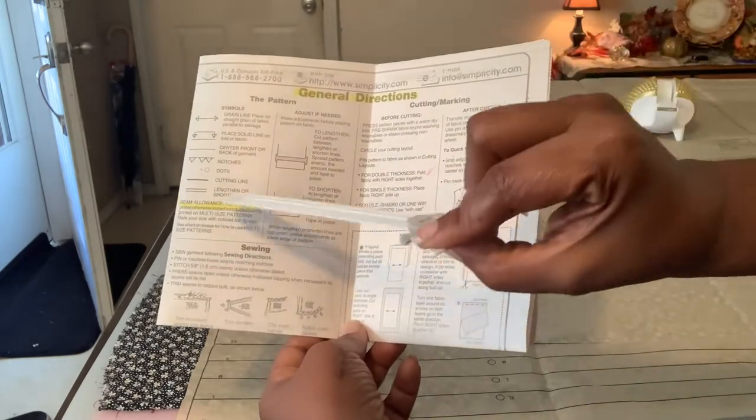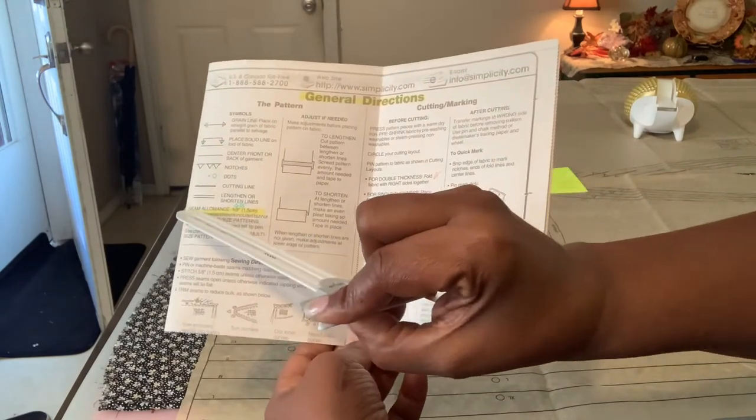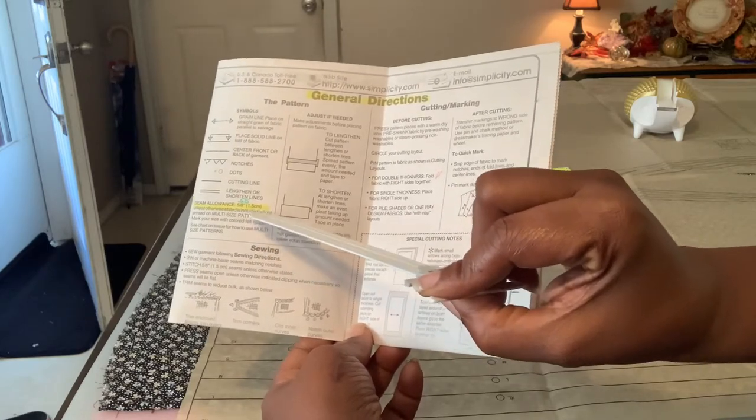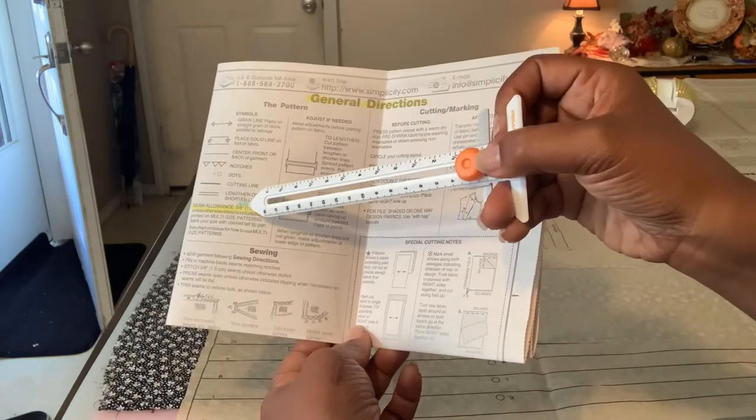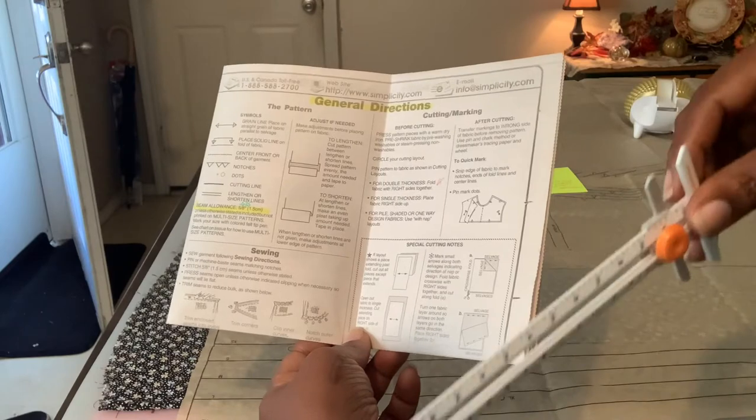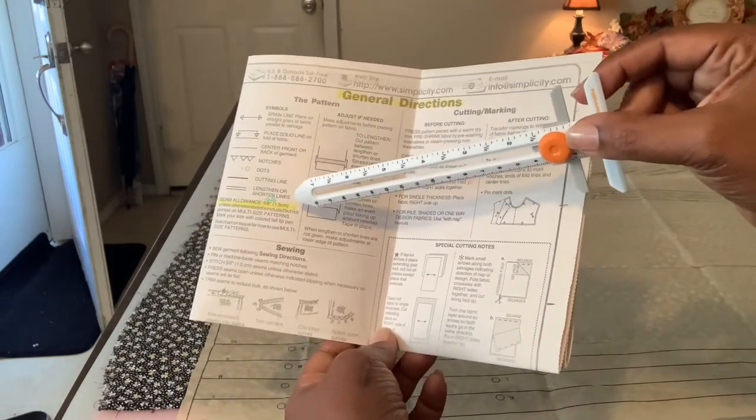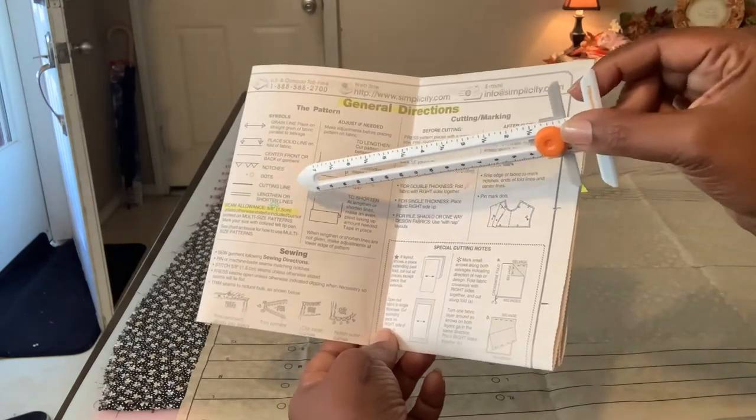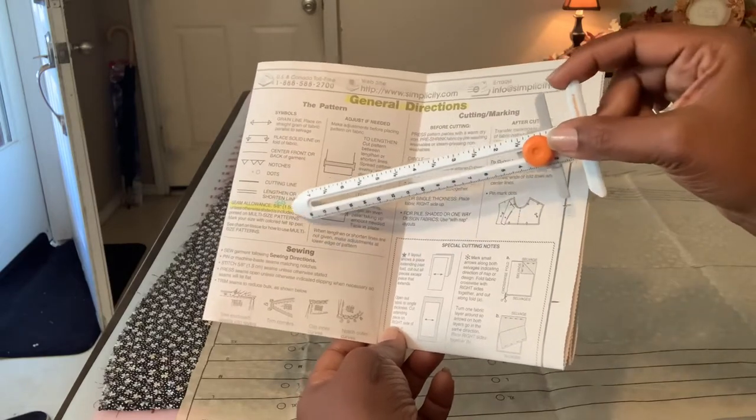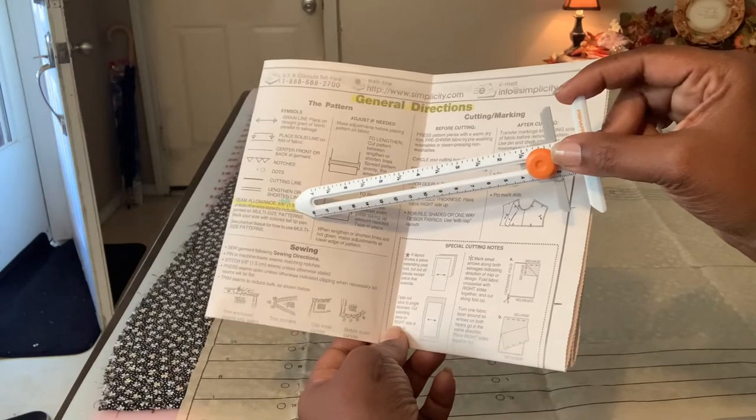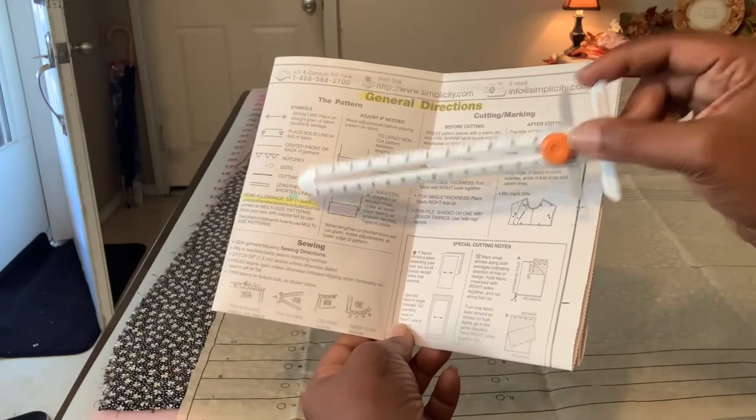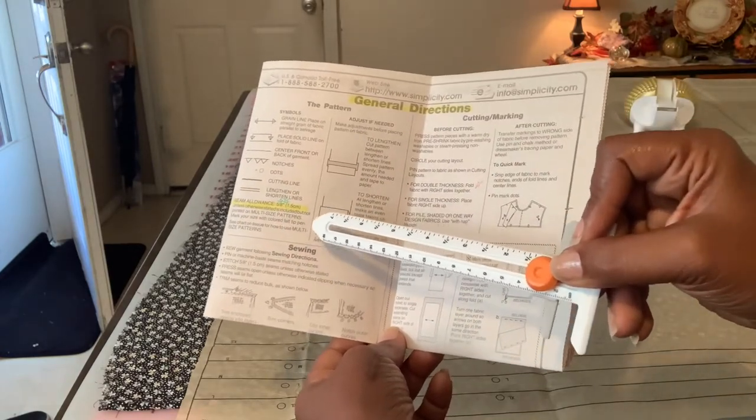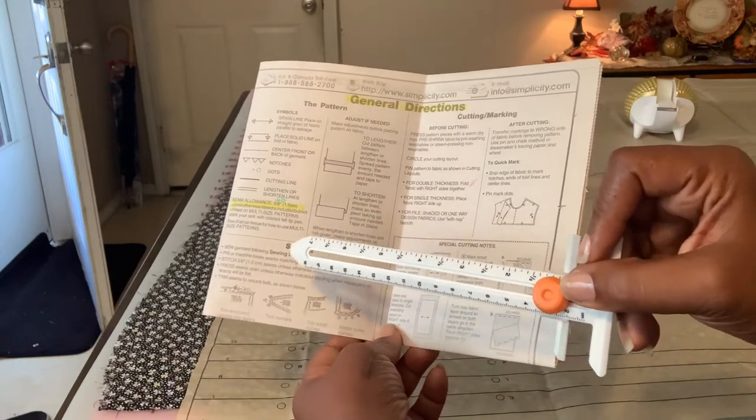Every pattern will have somewhere on that in those general directions what your seam allowance is. In this case, it's 5/8 inches or 1.5 centimeters. I always like to note that 5/8 inches is 0.625 inches. That is what you'll use, what you'll sew. You'll set that on your machine. You'll sew your seam line 5/8 inches in from the edge. And that is just a good number to note that most patterns will come with that as the standard seam allowance. Unless, and like the pattern says here, unless otherwise stated, this 5/8 inch is what your seam is going to be.